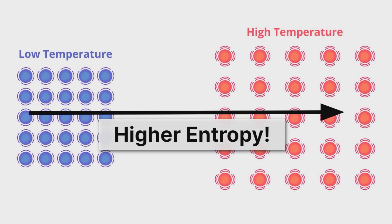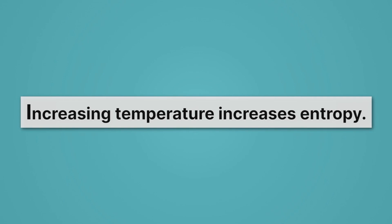Why is that? Well, the low temperature atoms shake around just a little, whereas the high temperature atoms shake around a lot. And so the high temperature atoms sample a bunch of different possible arrangements, and they're in a less tightly structured situation. So the high temperature stuff is higher in entropy. Increasing temperature increases entropy.